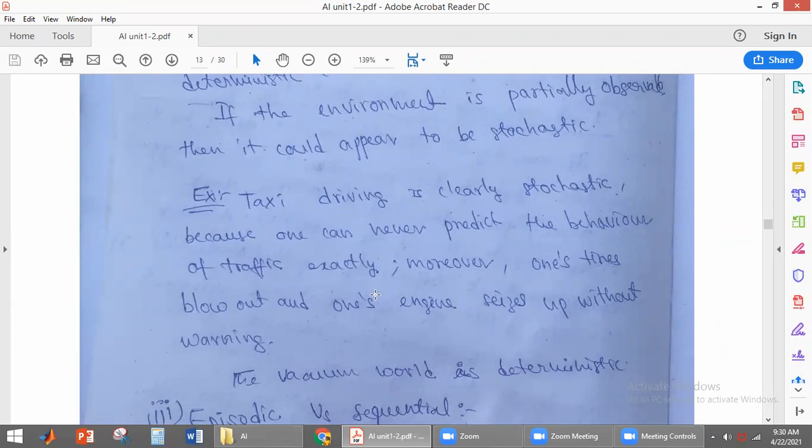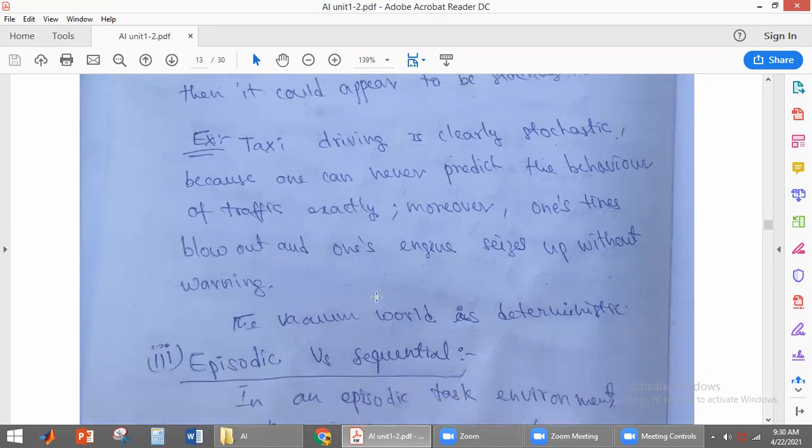Due to that changing behavior of the traffic and sometimes suddenly, we cannot predict when tires will blow off. Because of that, we cannot predict when the engine will shut down. Because of these parameters, we can say that taxi driving is clearly a stochastic environment.